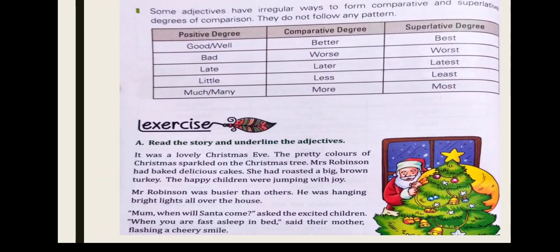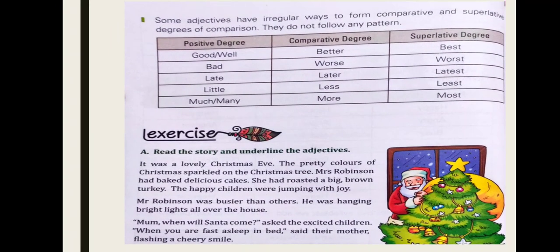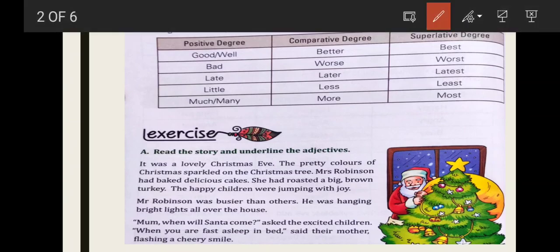Next is, read the story and underline the adjectives. It is a lovely Christmas Eve. So here are the adjectives: lovely. Pretty is the adjective, pretty colors.